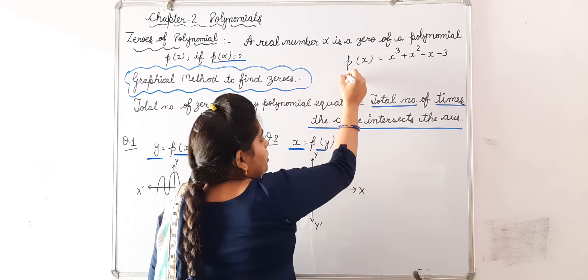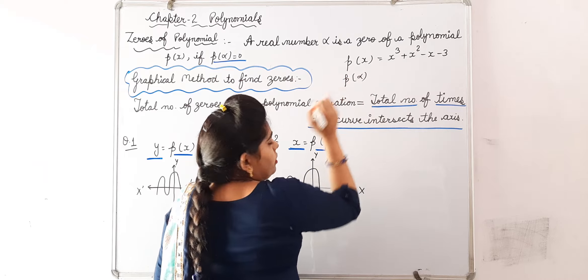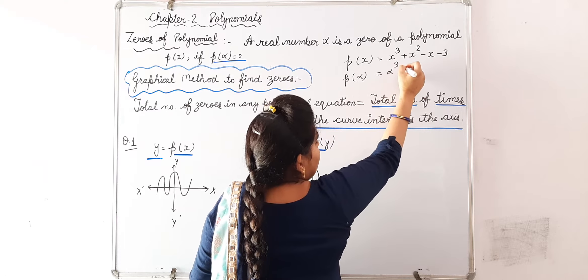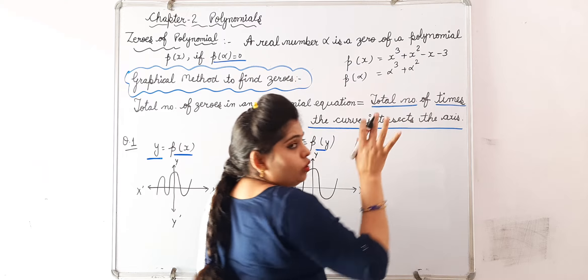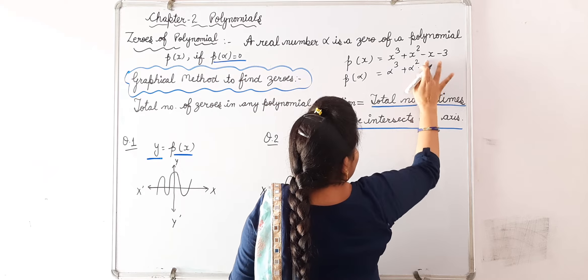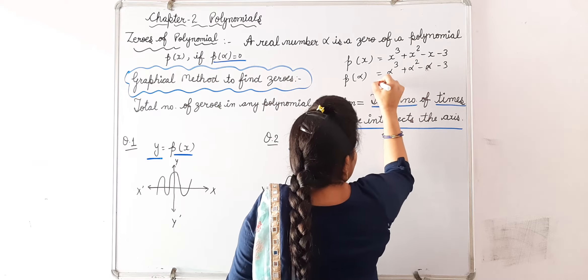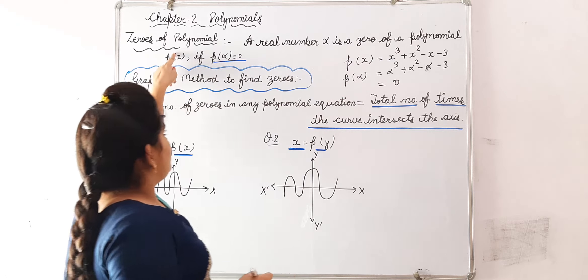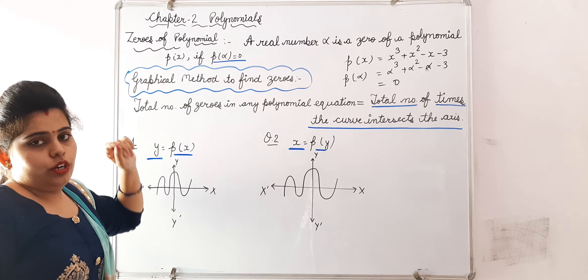If I put alpha in place of x, alpha is any constant value here, and after putting alpha, if I get equal to 0, then P of alpha is a zero of zeros of given polynomial. Is it clear?